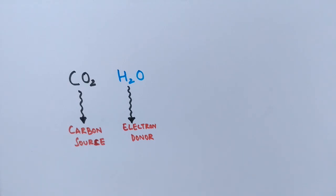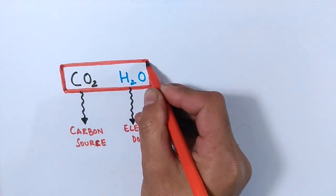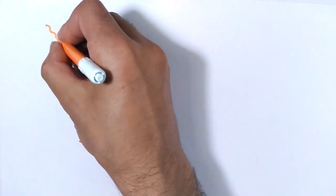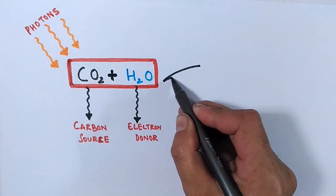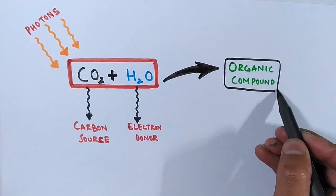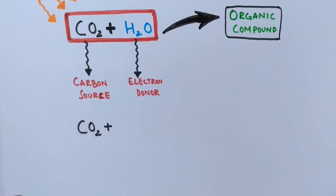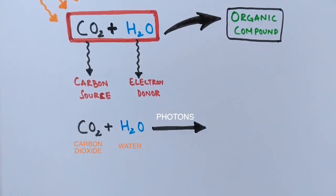Plants have these molecules to start with, and to initiate the reaction, they have chlorophyll pigment in the chloroplasts that captures light energy in the form of photons. After the reaction completes, we get organic compounds plus some gaseous molecules. The overall chemical reaction is: CO2 + H2O, with energy from photons absorbed by chlorophyll molecules.